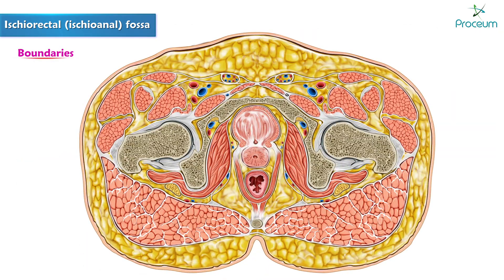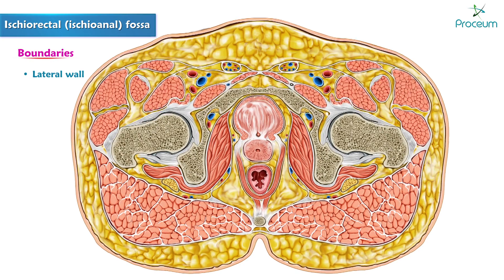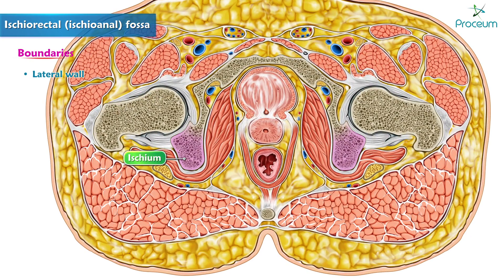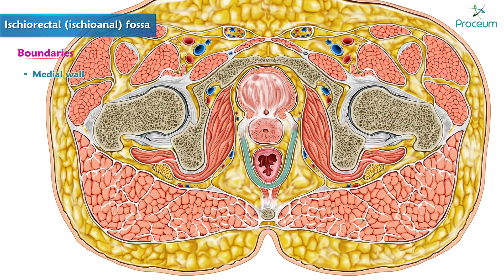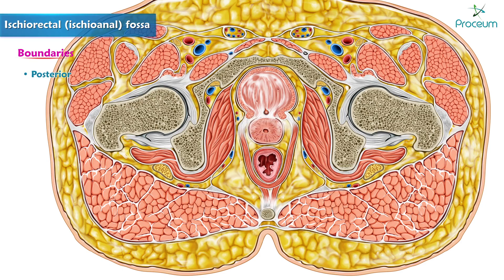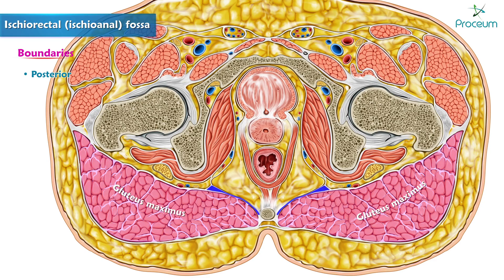Coming to the boundaries: the lateral wall of each fossa is formed by the ischium and obturator internus muscle. The medial wall is the levator ani muscle and the external anal sphincter. Posteriorly, it is bounded by the sacrotuberous ligament, on the posterior surface of which is the gluteus maximus.